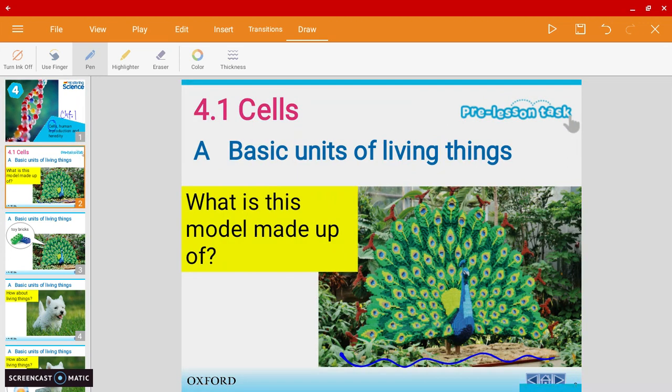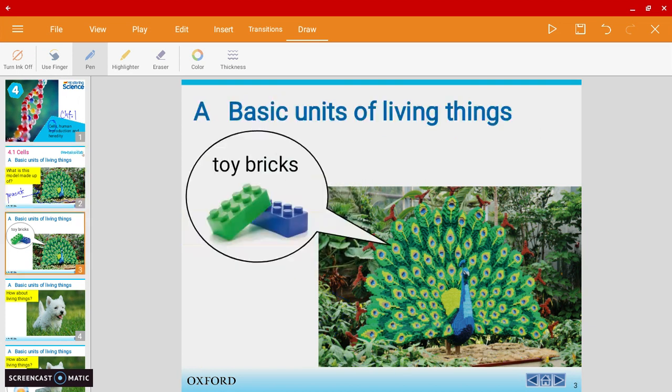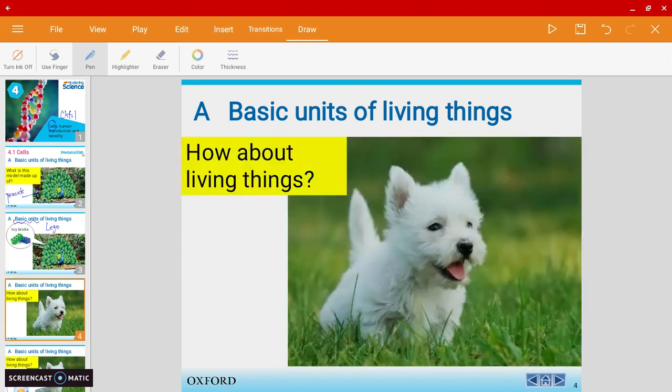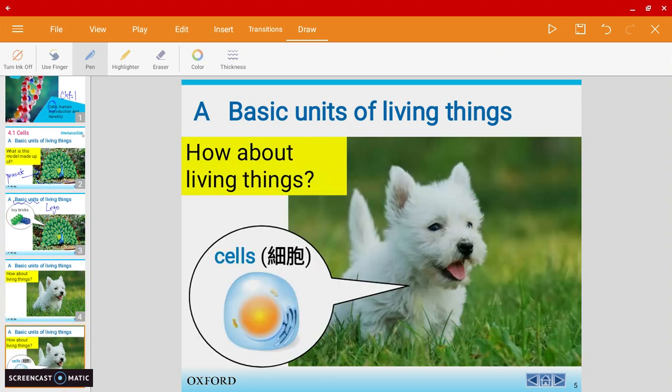Now let's look at the diagram. What type of living thing do you see? Yes, it is a peacock, but if you look carefully, you'll notice that it isn't actually a real peacock. It is made up of toy bricks, like Legos. How about in reality? What if it's a real peacock? What are real peacocks made up of? What's the basic unit of peacocks, a cute puppy, or us humans? The answer to this question is what we're going to talk about today: cells.